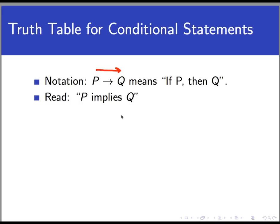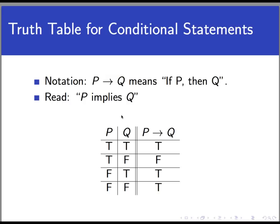So for all conditional statements, P implies Q, we have this truth table. So in other words, P implies Q is true in all cases except one. P is true, but Q is false.